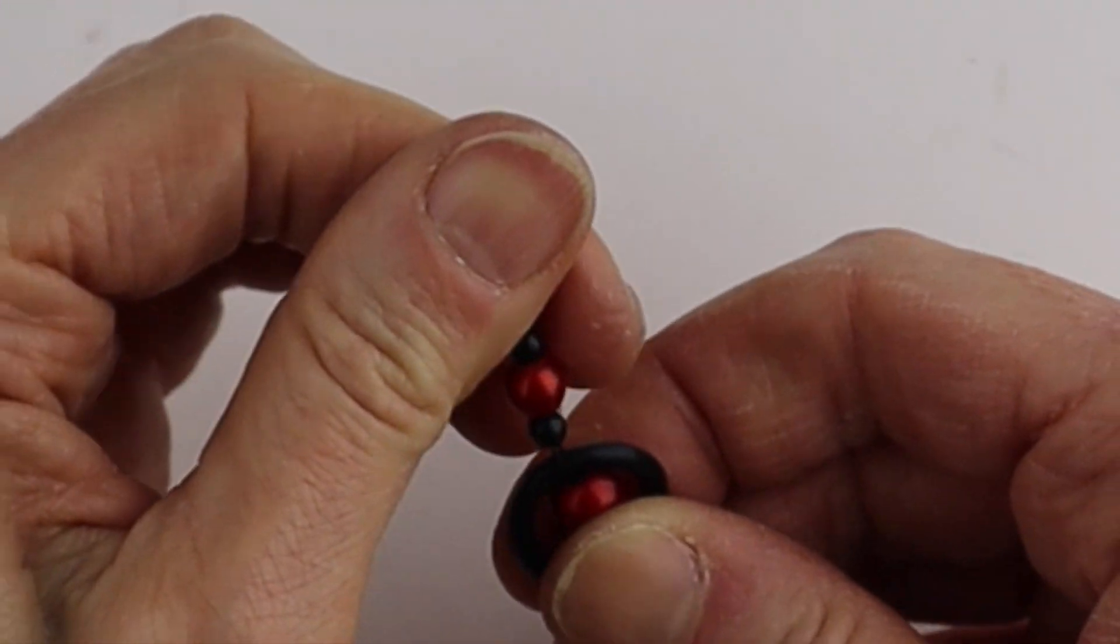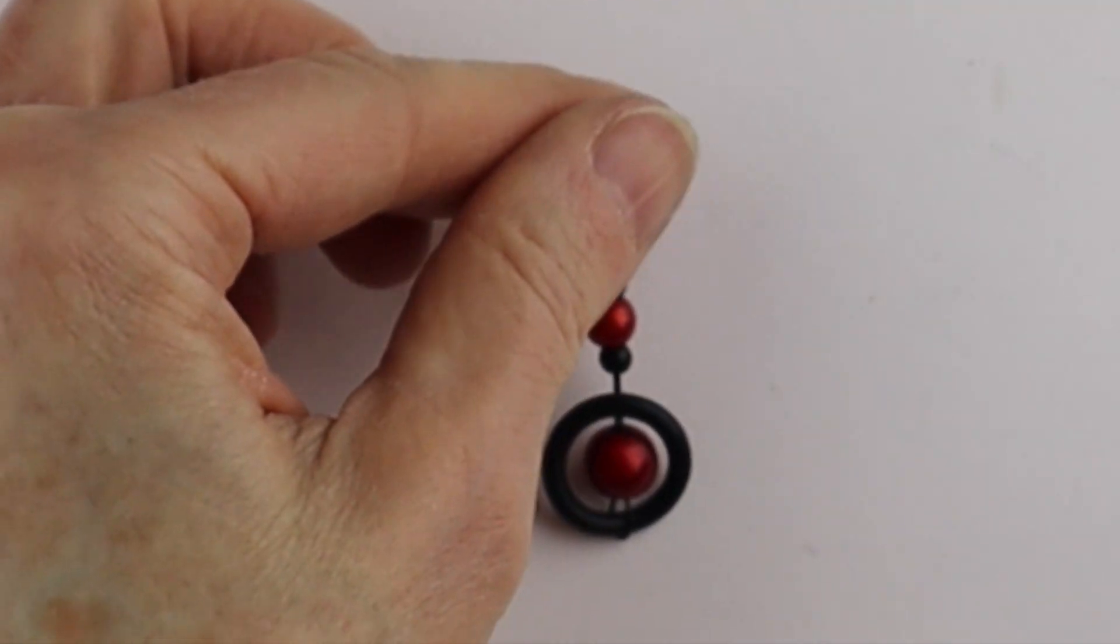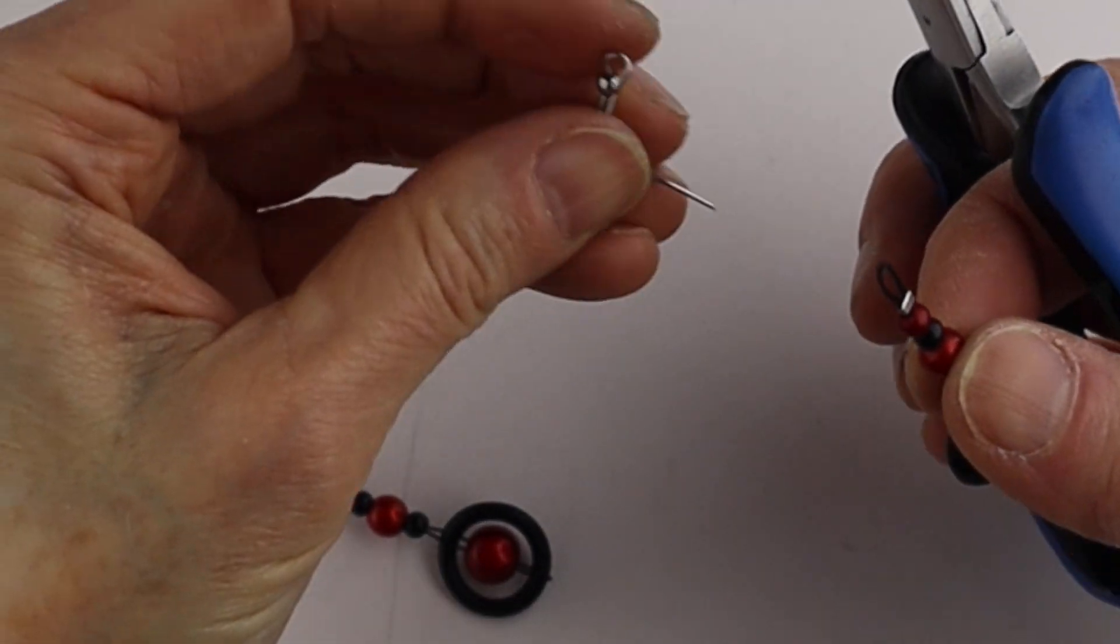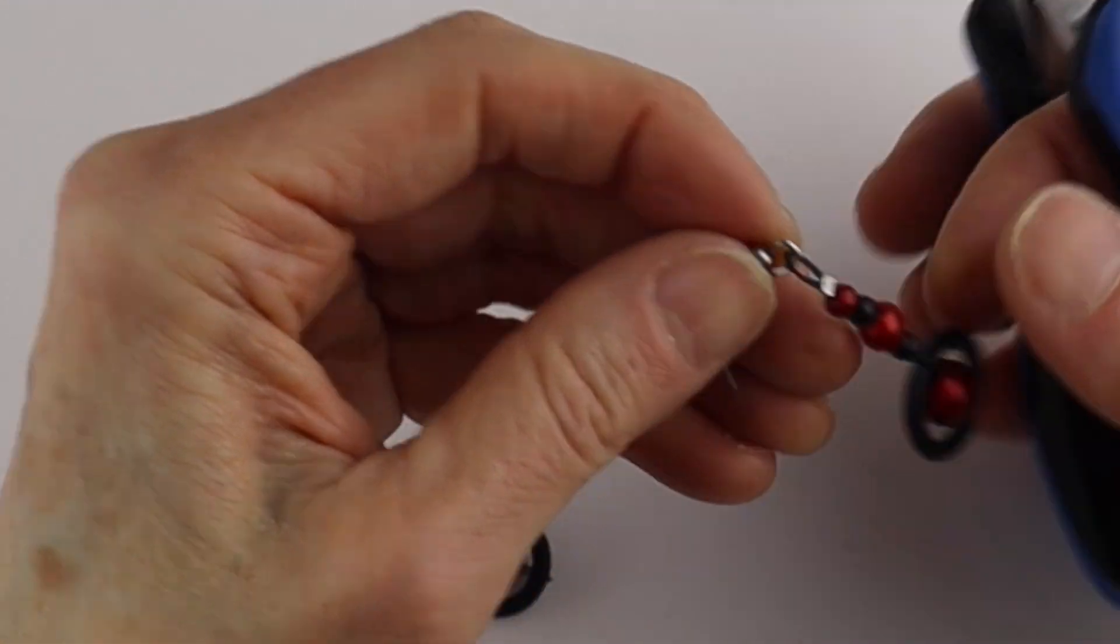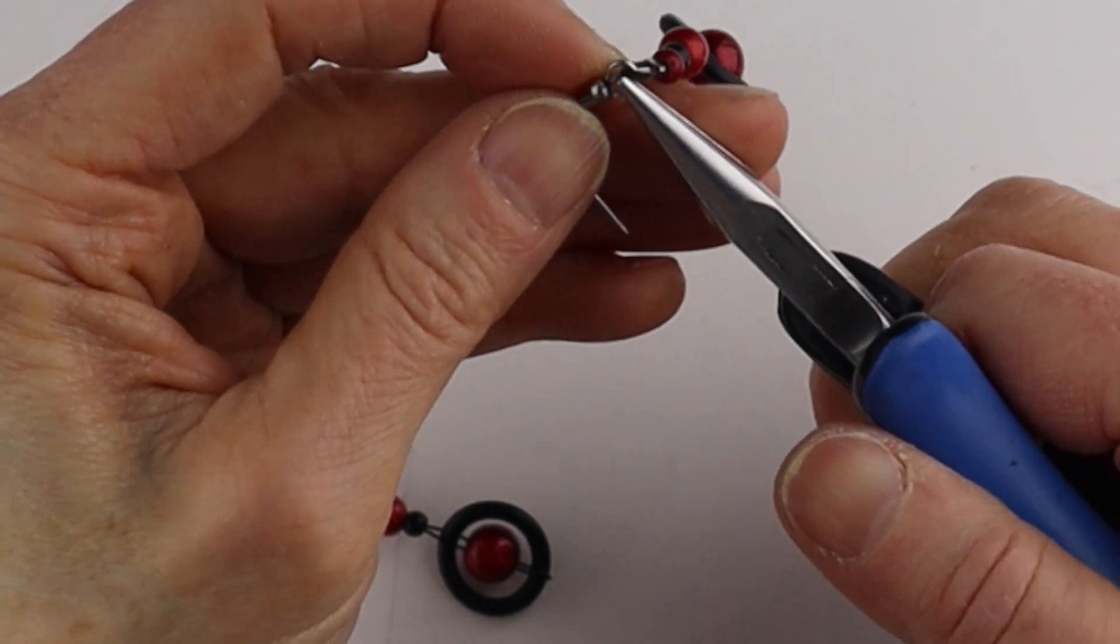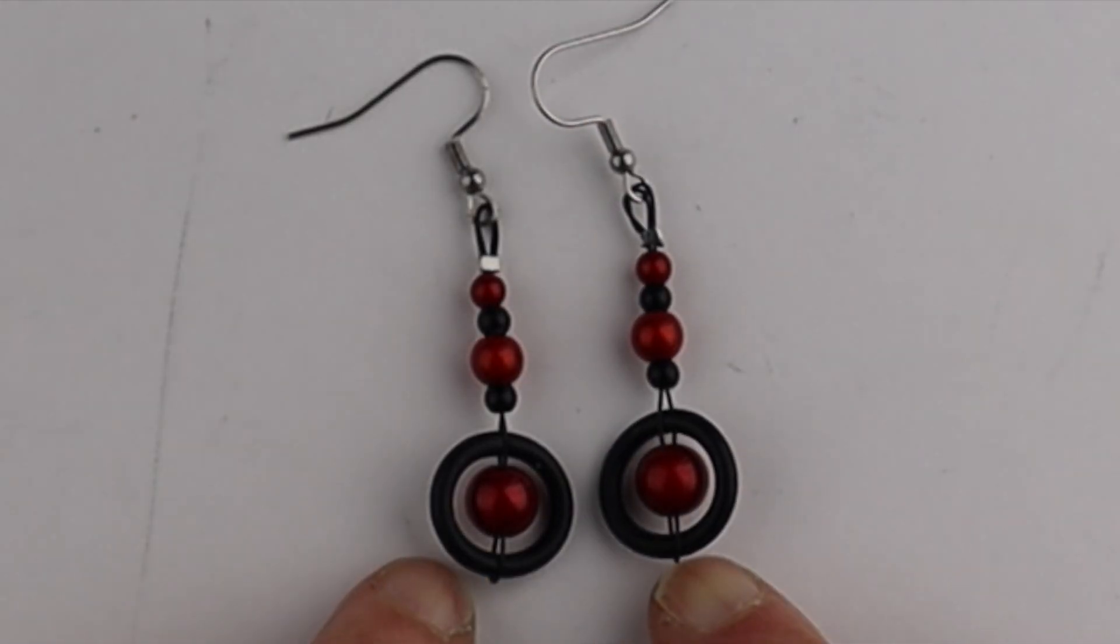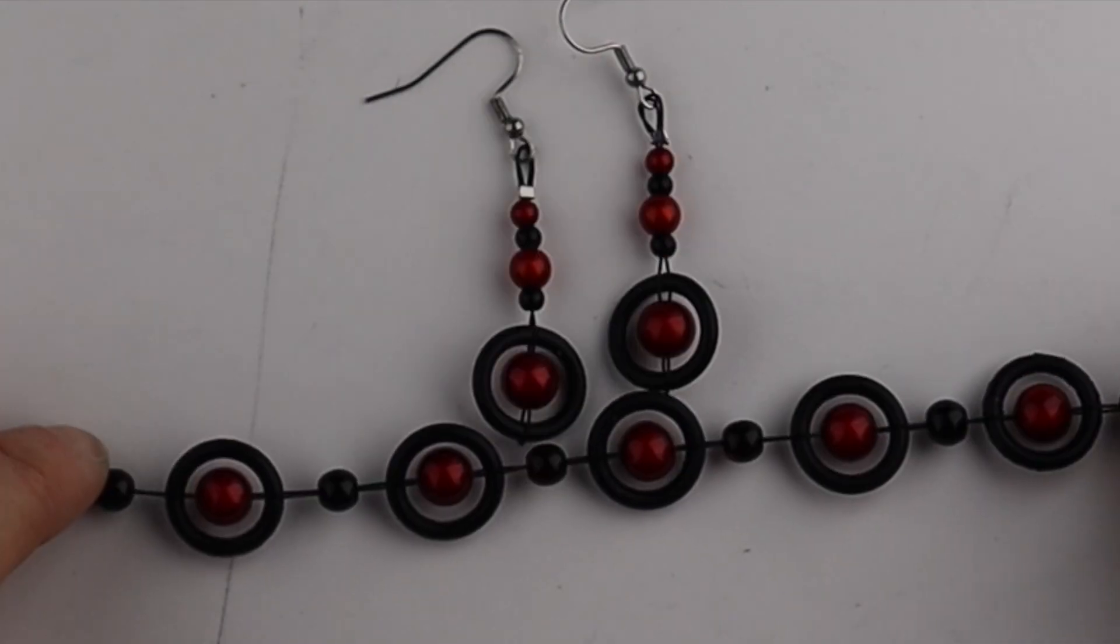There you have your earring. Get the hooks and attach them. There you have your cute little earrings with O-rings that match the bracelet.